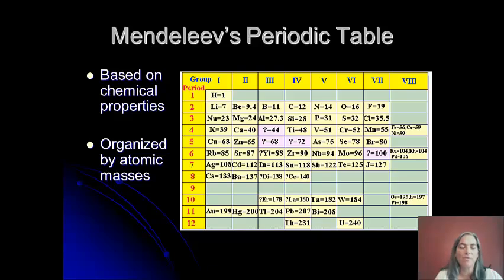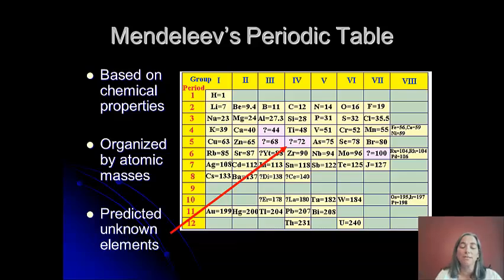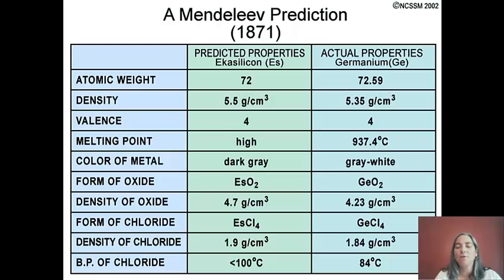The reason Mendeleev gets credit rather than other scientists is that he did something unusual — he actually predicted unknown elements. Those question marks are the ones he predicted would be discovered at a later date, and they were. One prediction he made was eka-silicon, meaning 'below silicon.' He predicted the atomic weight, density, melting point, appearance, and how it would form compounds with oxygen and chloride. When germanium was discovered, those predicted properties were actually pretty close, especially considering they had very little technology at the time.